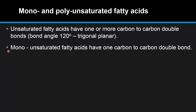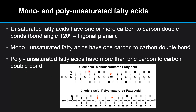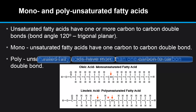Monounsaturated fatty acids have one carbon to carbon double bond. Polyunsaturated fatty acids have more than one carbon to carbon double bond. Here we have an example of oleic acid, which is a monounsaturated fatty acid — it has one carbon to carbon double bond. This is linoleic acid, which is a polyunsaturated fatty acid — it has two carbon to carbon double bonds.